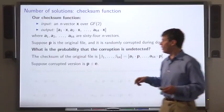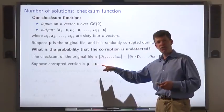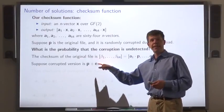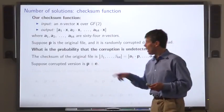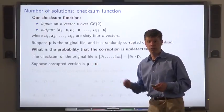Now let's write the corrupted version as p plus e. Remember we're doing GF2 addition, so in this case e has ones precisely at the positions in the file that were changed during the download process.